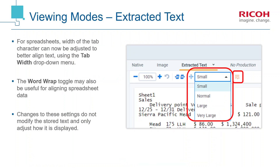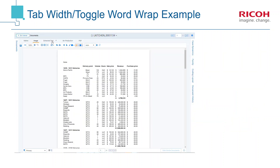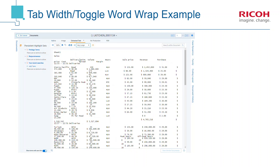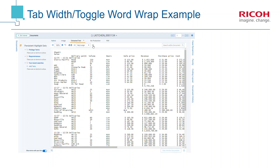In the extracted text mode, the tab width and toggle wordwrap features can be used to better align text found in spreadsheets, without actually altering the underlying text of the document. For example, when viewing the extracted text for this spreadsheet, changing the tab width to Very Large better aligns the document's content. Toggling the wordwrap further improves the readability of this document. The stored document itself will not be altered by these functions — they only affect the way the text is displayed within Relativity.